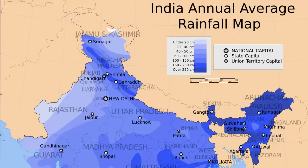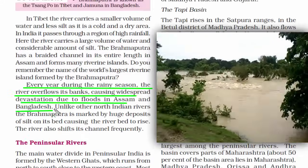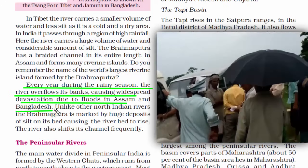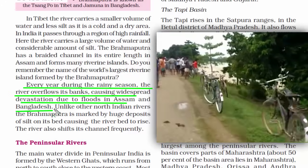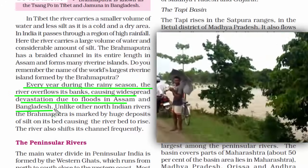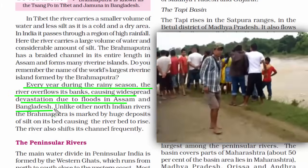Another important thing to remember is that the Brahmaputra causes floods in Assam and Bangladesh. The region of Assam and Meghalaya receives plenty of rainfall during monsoon. Since Himalayan rivers are perennial, the additional water from rainfall causes huge devastation. So this was all about the journey of the Brahmaputra.